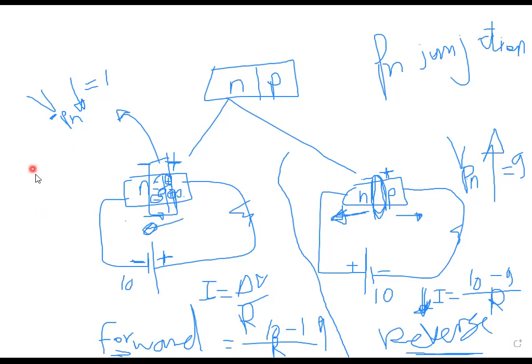A diode is a semiconductor PN junction. According to the features of a diode — it can conduct current or not conduct current — this switching behavior of being 0 or 1 can be used to build logic gates such as AND and OR gates. In the coming lectures, we will show how semiconductors can be used for building logic gates.